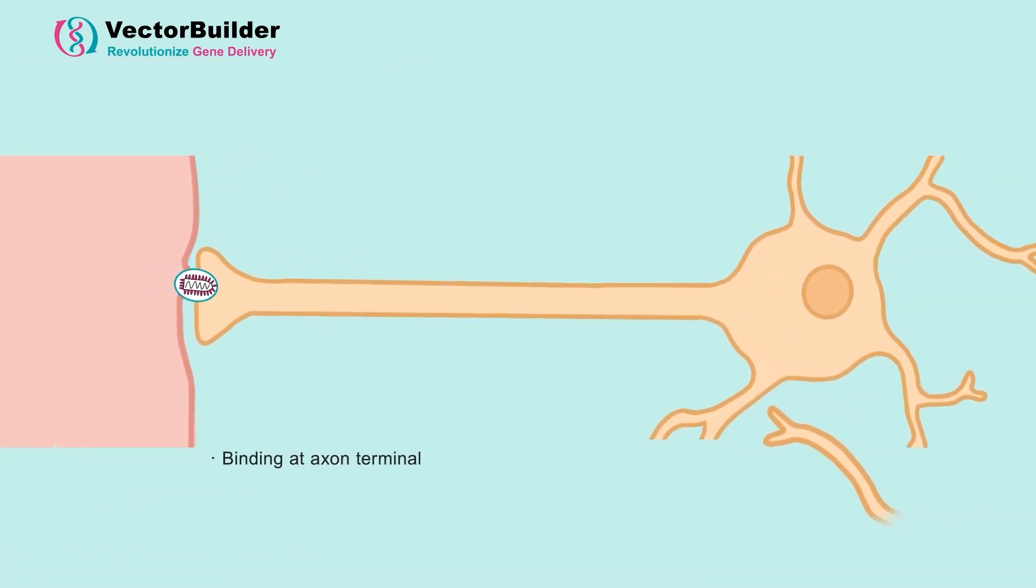The virus enters the neuron at the axon terminal and is transported in a retrograde direction up the axon to the cell body. Here, the virus replicates, aided by a very simple viral genome consisting of only five genes.